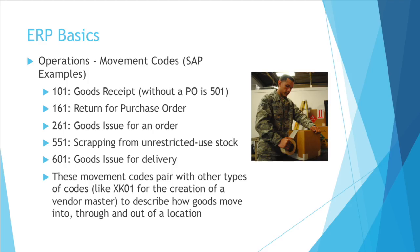Let's go into some basics of what you can do with ERP software — I'm only going to touch on a few very basic things. ERP has so many different modules and versions, you could talk about ERP software for days. In operations, you track things in an ERP system using movement codes, at least in a lot of the big ones. The following movement codes are used in SAP, one of the leading ERP software providers.